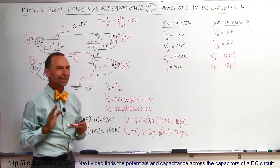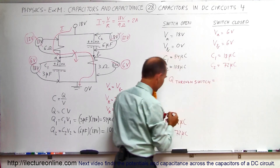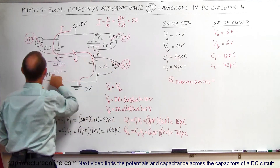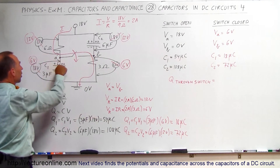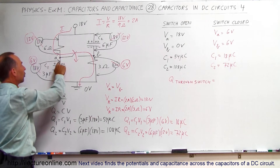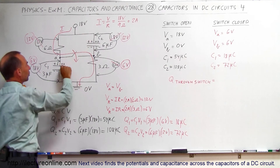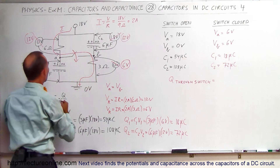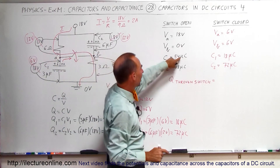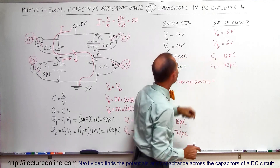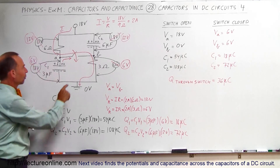How much charge flows through the switch? Starting with C1: it went from 54 down to 18 microcoulombs, so it is losing charge. That positive charge cannot go through the capacitor, so it must go through the switch. The charge from C1 flowing through the switch left to right is 54 − 18 = 36 microcoulombs.